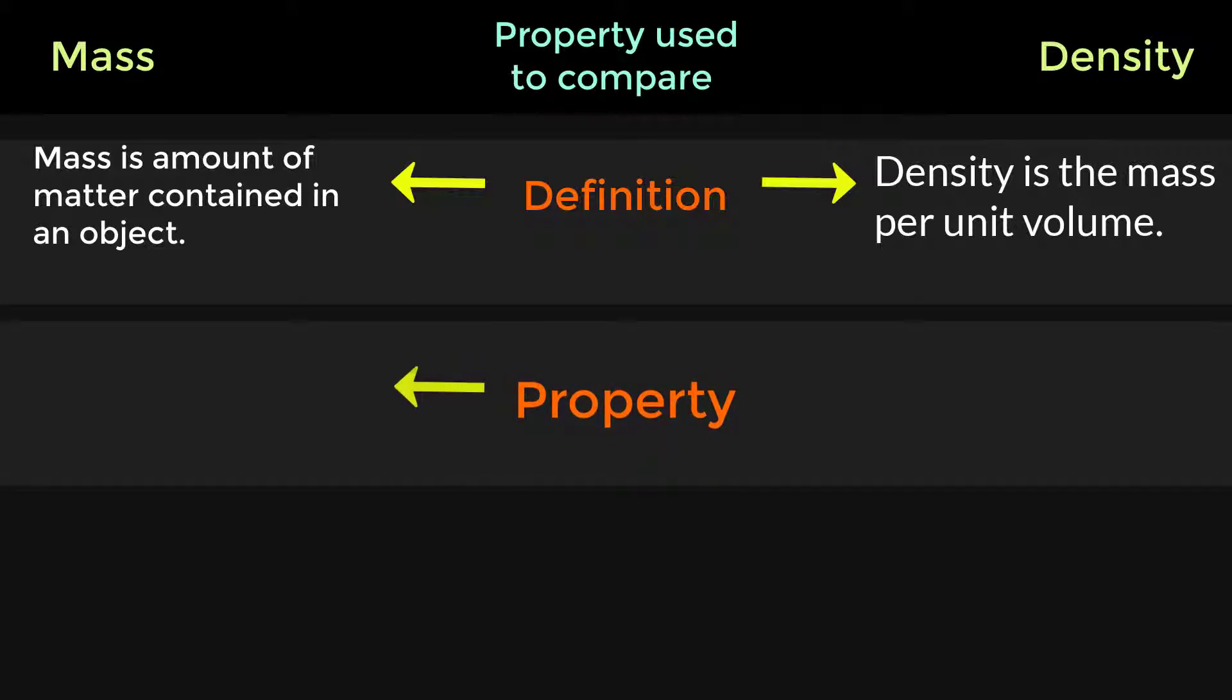Property. Mass is a measure of inertia. Density is the degree of compactness.